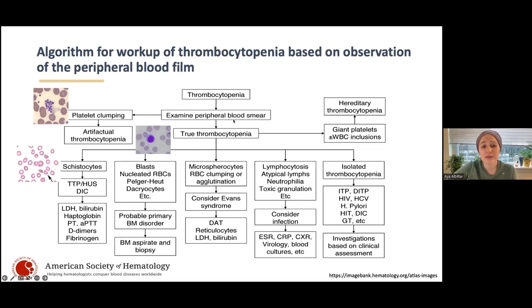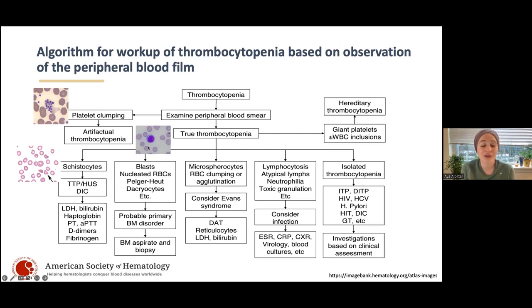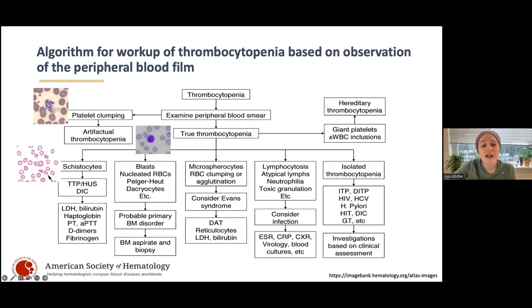If you don't see schistocytes but you see blasts, which are large cells the bone marrow is pushing out, then you're thinking about bone marrow disorders and going in a whole different direction. The thrombocytopenia is just a manifestation of that.